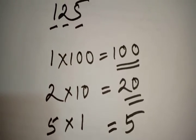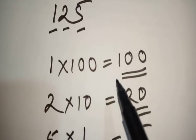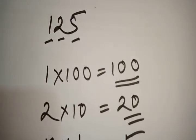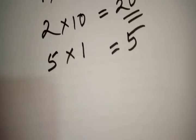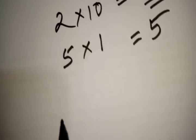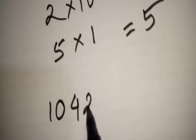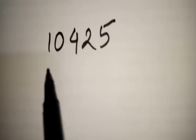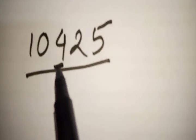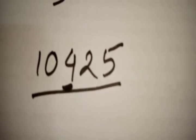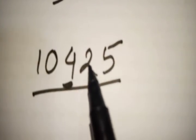This is the place value system, which applies to the number 10,425. This is a natural number.